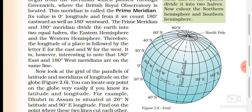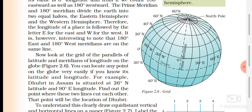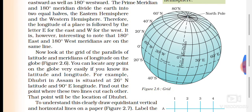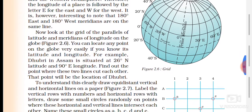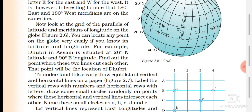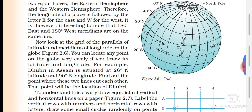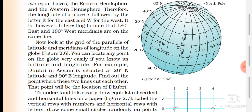The part towards the east of the prime meridian is east longitude, and the part towards the west is west longitude. It is interesting to know that the 180 degree east and 180 degree west meridians are on the same line.